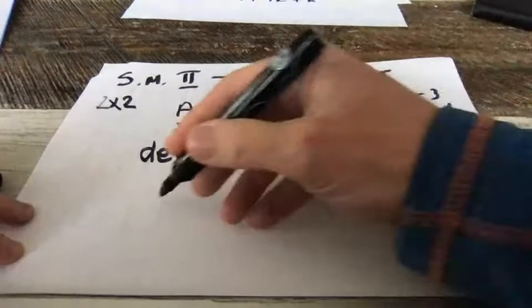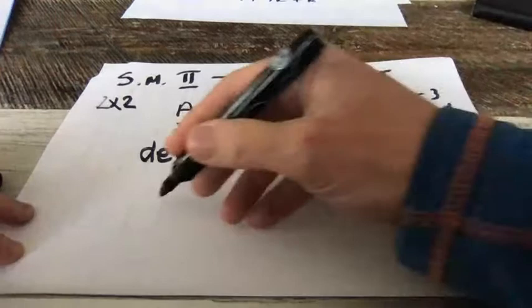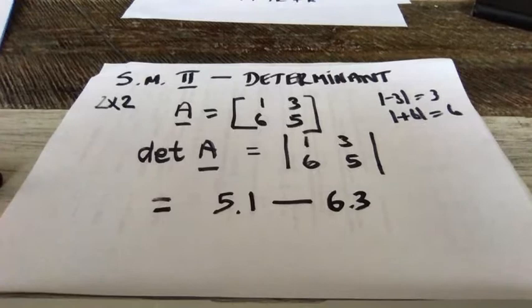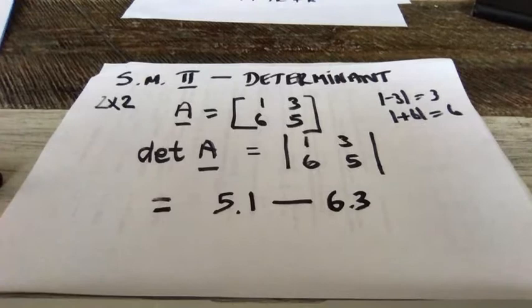Watch what I'm doing here because this is really important. To calculate the determinant of a 2 by 2 matrix, you multiply the two main diagonal elements — in this case you get 5 times 1 — and then minus the product of the other two, which in this case is 6 times 3. So you get 5 minus 18, which is minus 13.